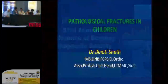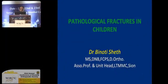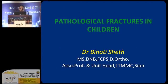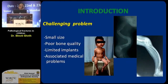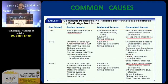Good afternoon, everyone. Pathological fractures in children are much more challenging than what you have seen till now because the size of the bone and the child is small, the bone quality is most of the time poor, we have limited implants available, and all these children have associated medical problems. Many benign and malignant conditions and many general conditions lead to pathological fractures, and you can see the list of causes for pathological fractures in various age groups.